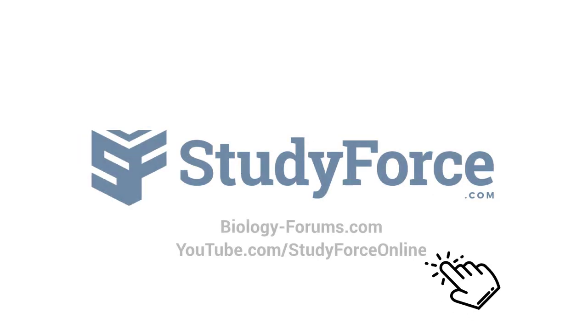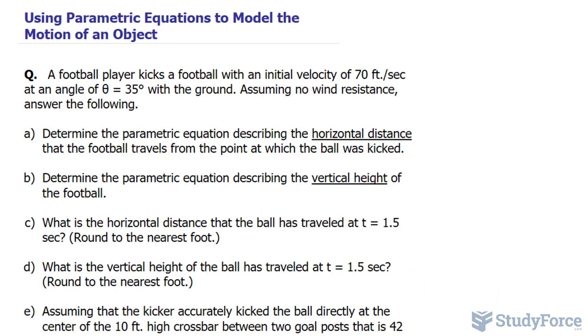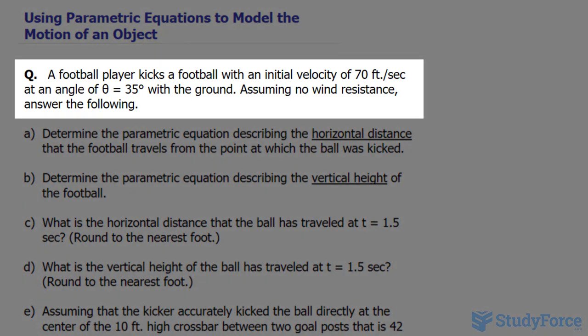In this lesson, we'll discuss where we can apply parametric equations in the real world. The question reads: a football player kicks a football with an initial velocity of 70 feet per second at an angle theta equals 35 degrees with the ground, assuming no wind resistance, answer the following.